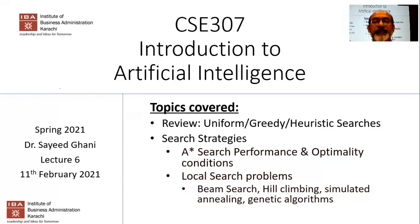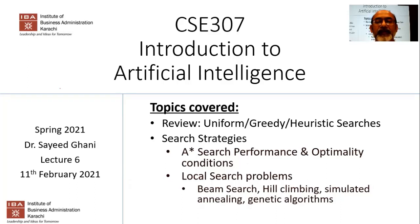Let's start today's lecture with a quick review of the past lecture. Today we'll be concluding our discussion on A* search, particularly looking at its performance and the optimality condition - whether it is an optimal search algorithm. Once we're done with that, we'll start looking at local search problems in chapter four, covering algorithms such as beam search, hill climbing, simulated annealing, and perhaps genetic algorithms.